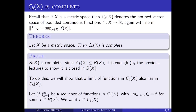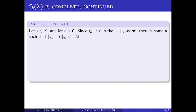So let me take a sequence Fn, n equals one, two, three and so on, of bounded continuous functions on X, and suppose that they tend to a limit in the sup-norm metric. Let's call that limit F. So F will be some bounded function on X, and I want to show that in fact F is a bounded continuous function on X. Let's pick a point A in big X; I'm going to show that F is continuous at A. So let epsilon be greater than zero. By the assumption that Fn tends to F in the sup-norm, there is a value of little n such that the sup-norm of Fn minus F is less than or equal to epsilon over three.